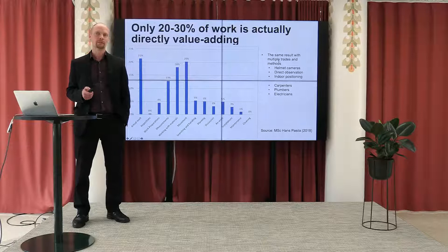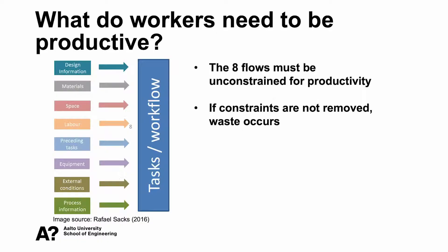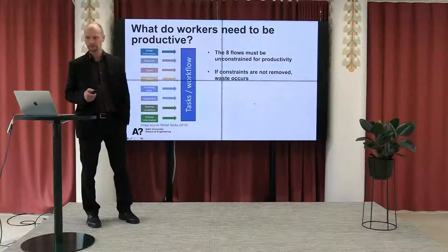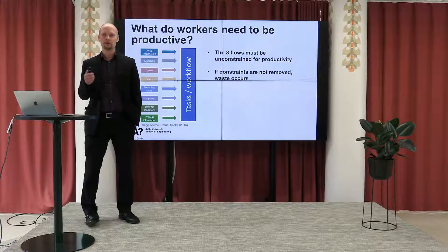In order for workers to be productive, they need a lot of different things available at the right time in the right location. They need feasible designs that can be constructed, all the materials needed to implement the task, obstacle-free space, workers need to know where to go, preceding tasks must be completed, they must have the right equipment, and humidity, temperature, and other external conditions must be just right. All eight of these things must happen for productivity to occur — if any one is missing, you lose value-added time looking for materials or space. The key to improving productivity is to focus on decreasing this wasted effort caused by missing one of these constraints.